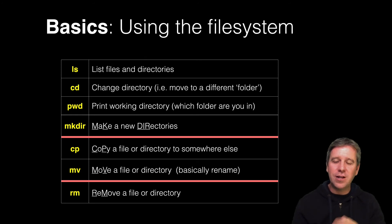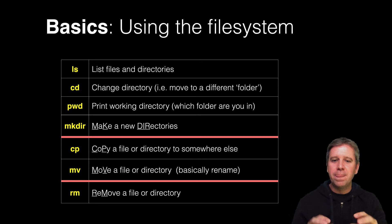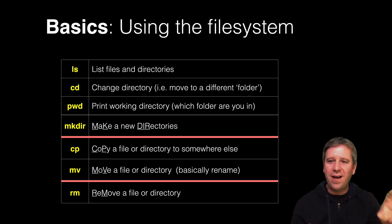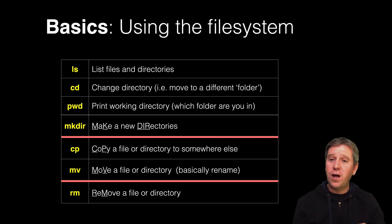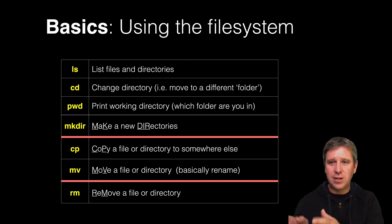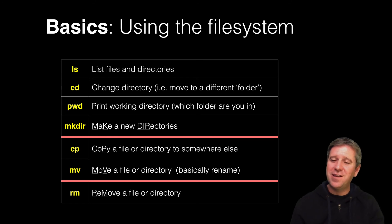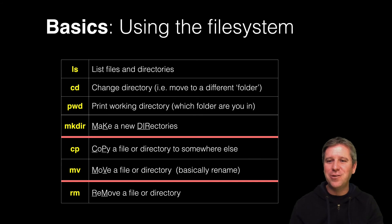We've covered ls, cd, pwd, and mkdir. The next two commands are cp (copy) and mv (move). They do what their names suggest: cp copies a file from a source to a destination — it's always source then destination in the UNIX world. You'll end up with a duplicate file with a different name. mv does essentially the same thing but works like rename — the original file will no longer be there. Below those is rm, which removes a file or directory.